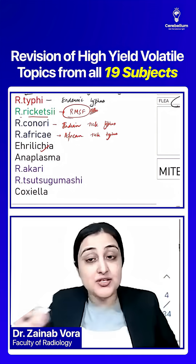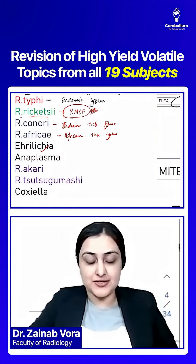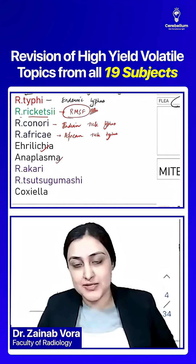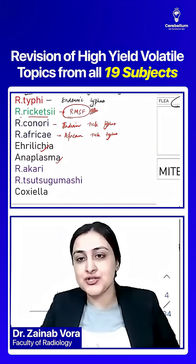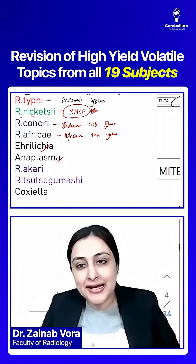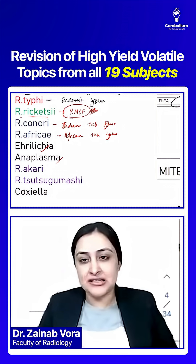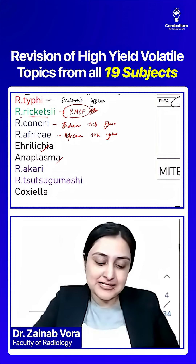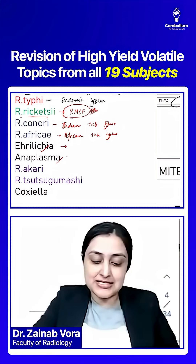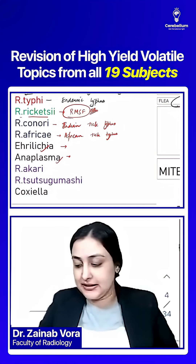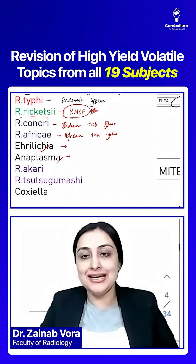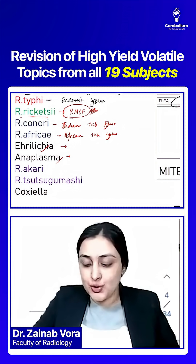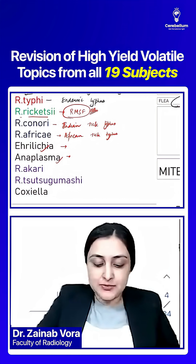We also have Ehrlichia causing Ehrlichiosis, and Anaplasma causing Anaplasmosis. The exam won't simply ask which organism causes which disease — they'll ask which cells are affected. This is a repeat question, so we need a mnemonic: GAME.